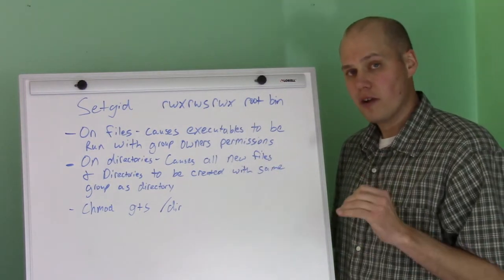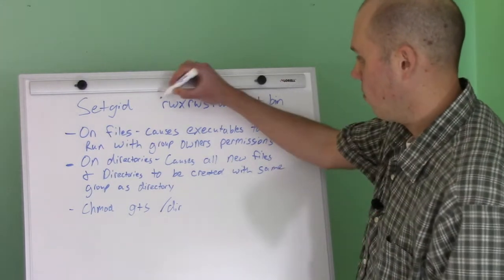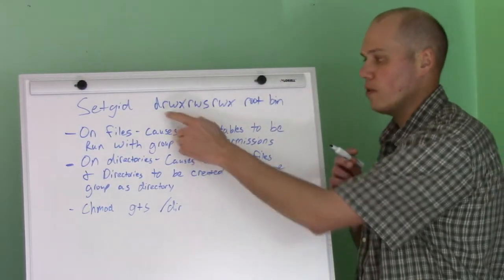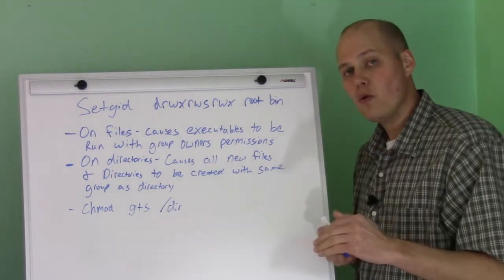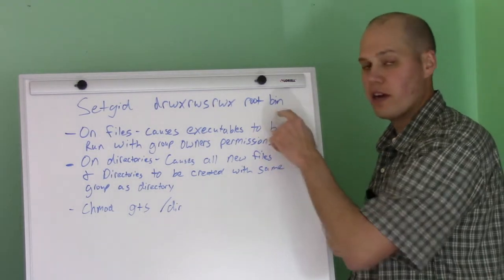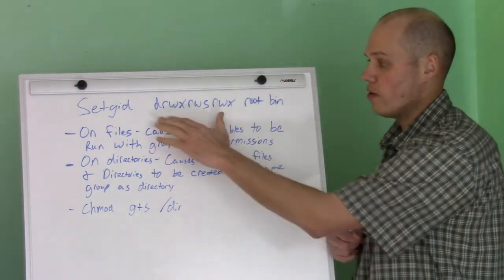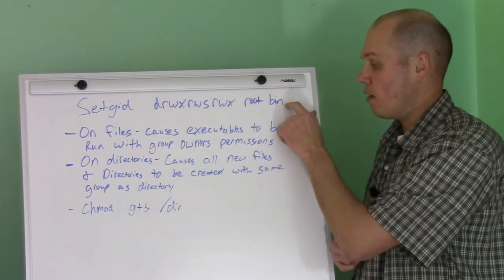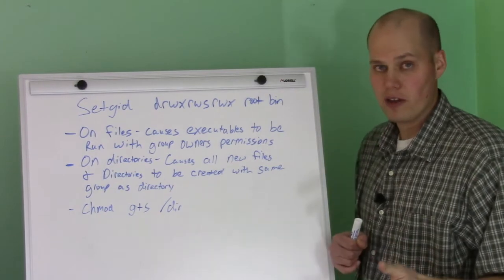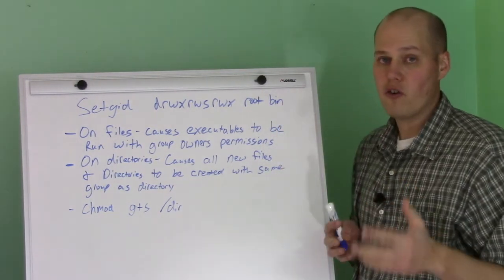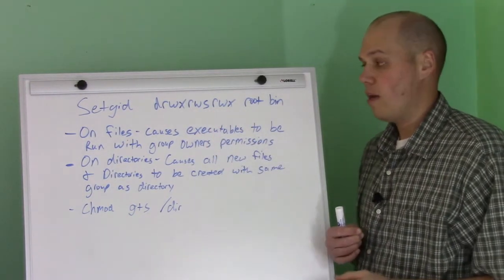If it's a directory, it works totally differently. Any new files or directories placed in that directory will inherit the group owner. So if I have a directory set up like this and I create a new file in there, the file is going to have the bin group owner. If I create a new directory in there, same thing — it's going to have the bin group owner, and the new directory will also automatically have the set GID bit set as well.